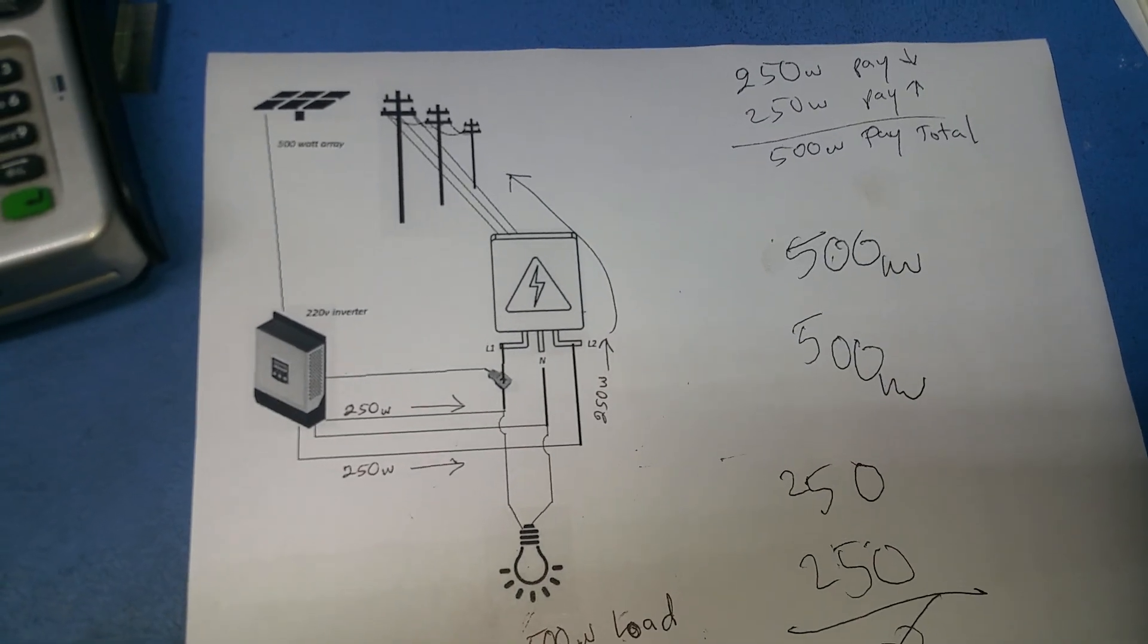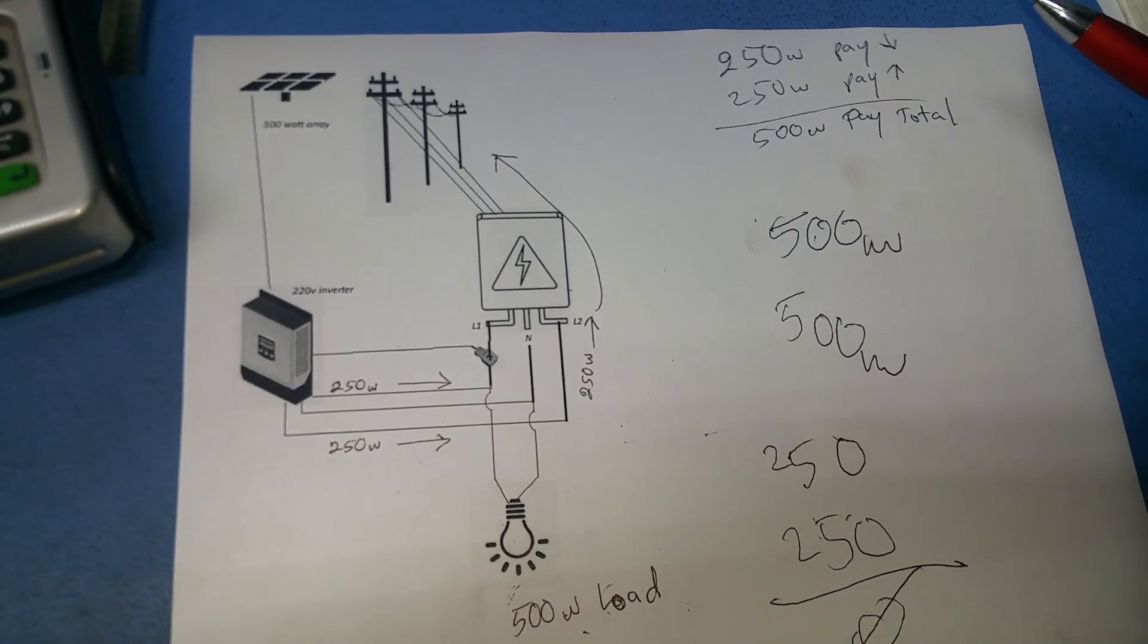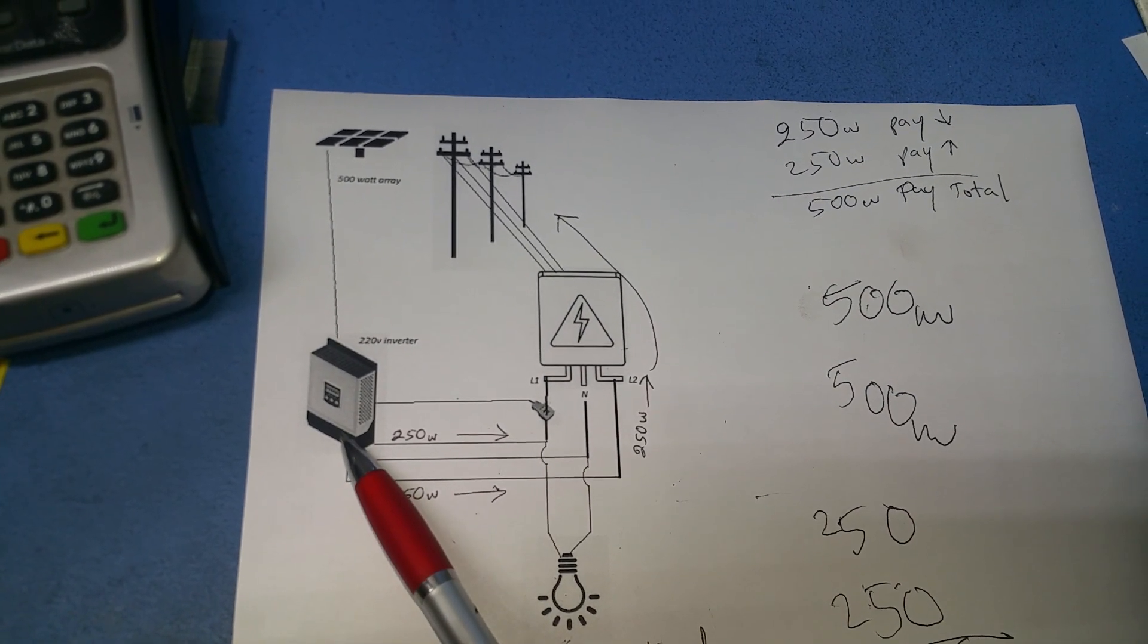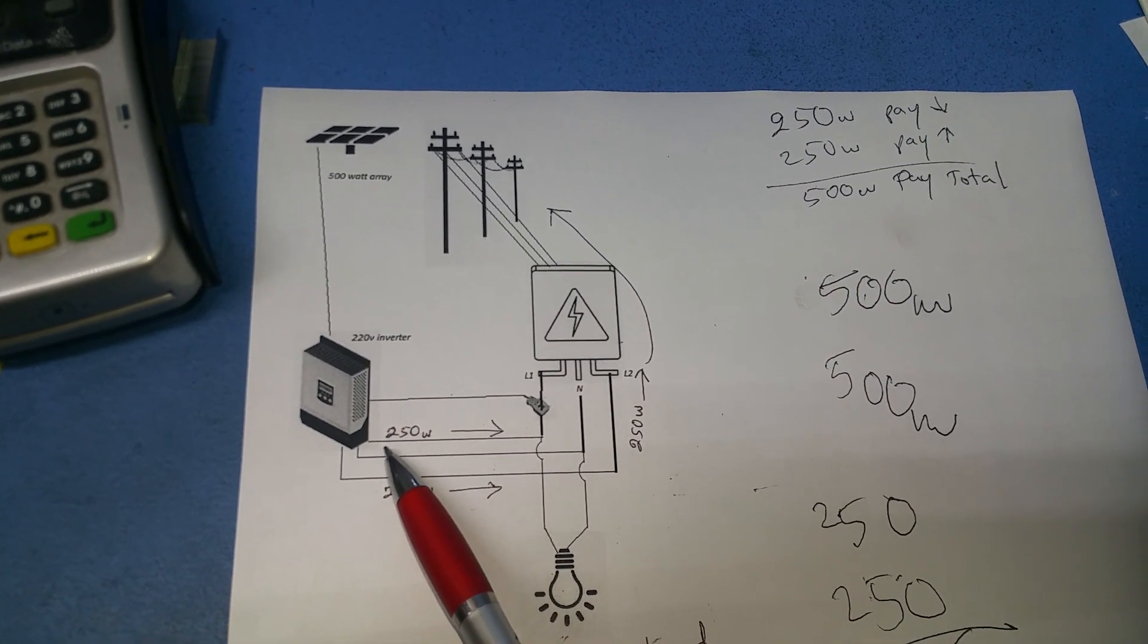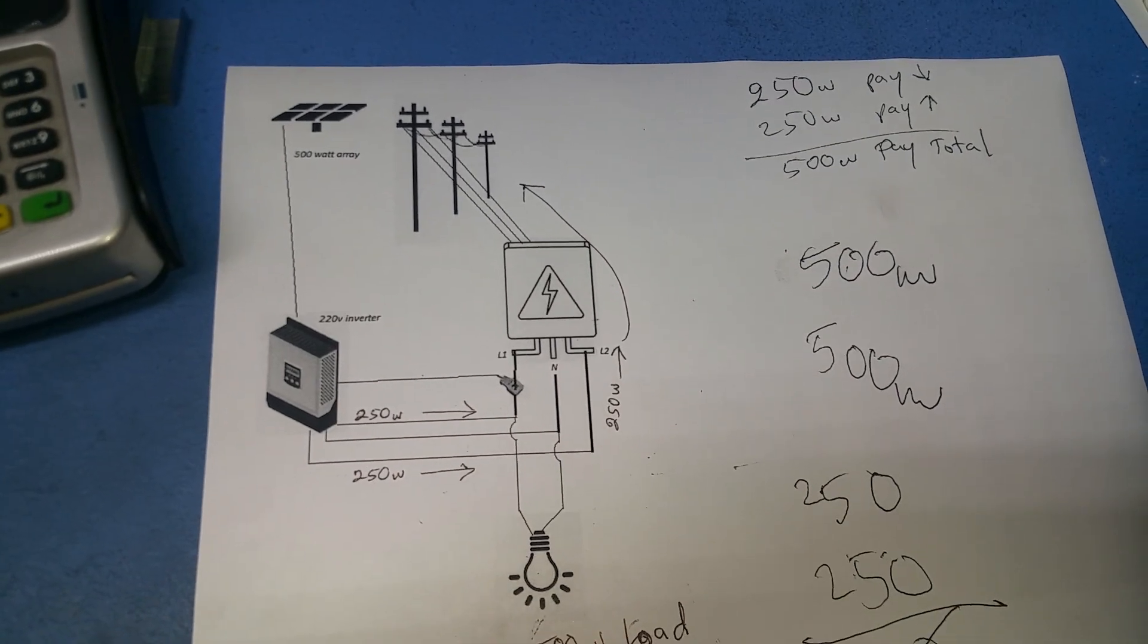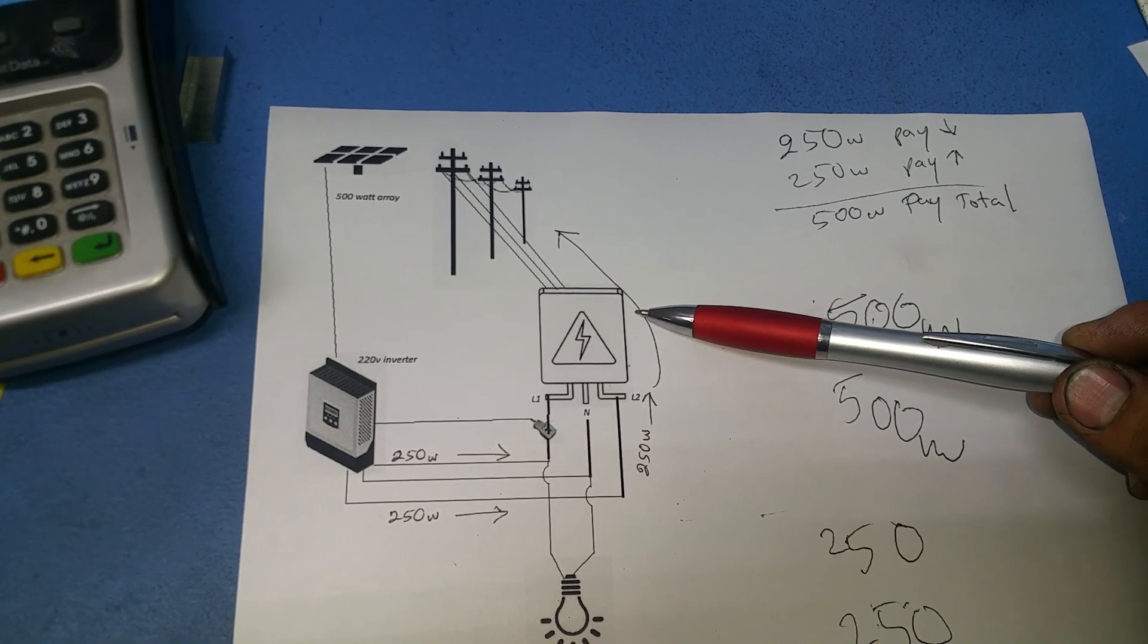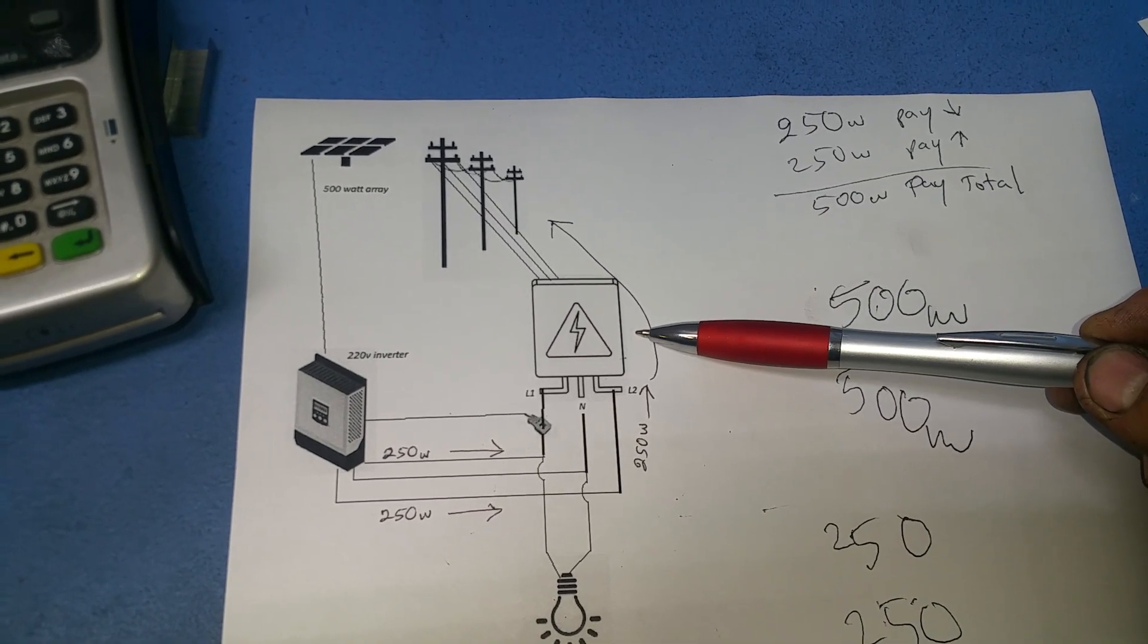I have a question regarding grid tie inverter with limiter. I'm a little bit confused because here in the United States we have a split phase system.